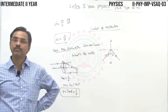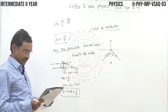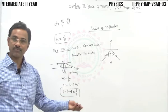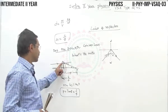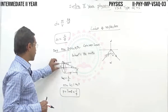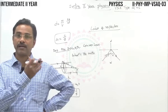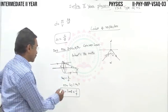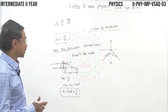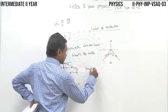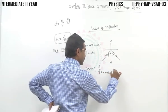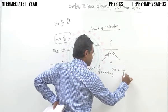The power of a lens is defined as the tangent of the angle of convergence — or divergence — when a ray is incident at unit distance from the optical center. It is numerically equal to the reciprocal of focal length expressed in meters. If expressed in centimeters, a factor of 100 comes in.